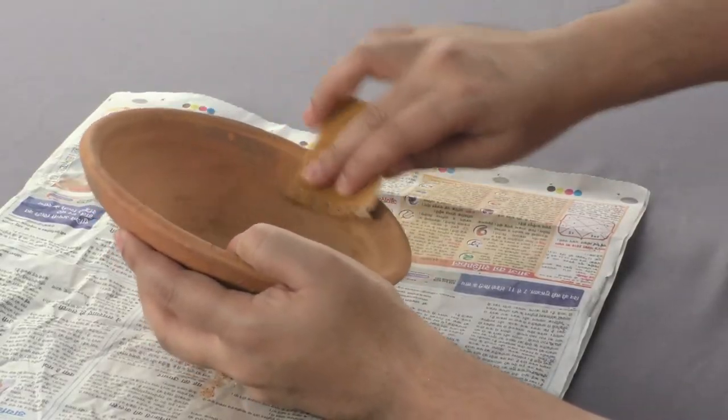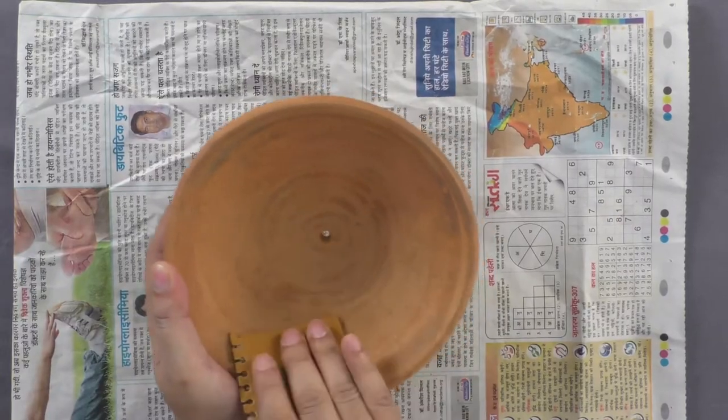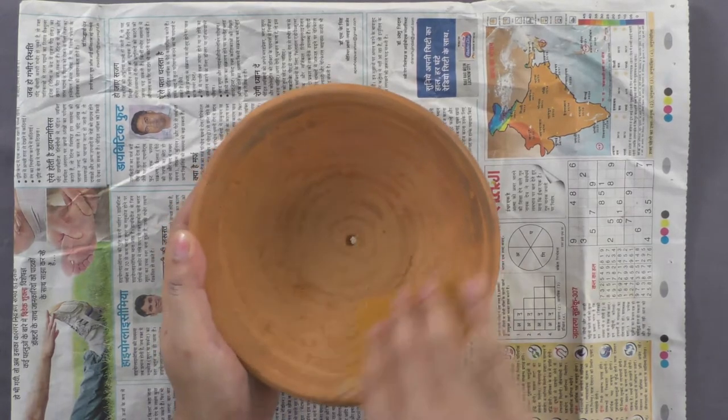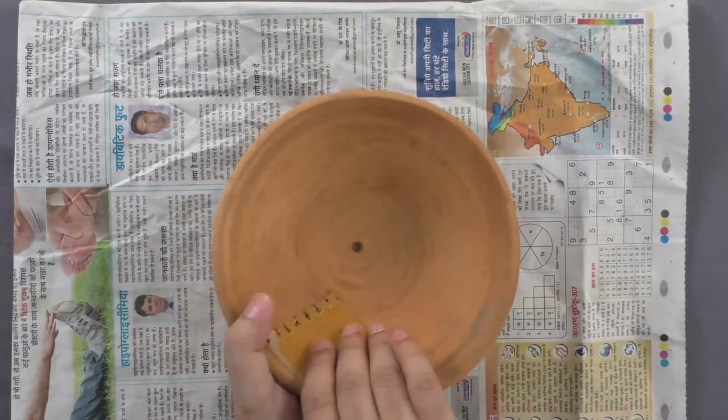Now, we will take a sandpaper to smoothen the surface of the earthen bowl, just the way we are doing here.